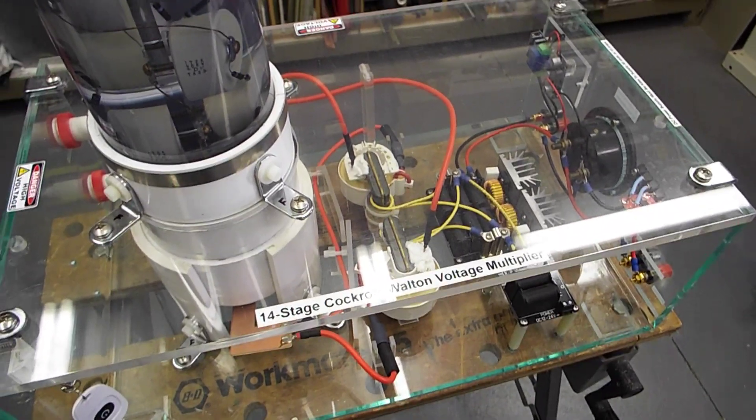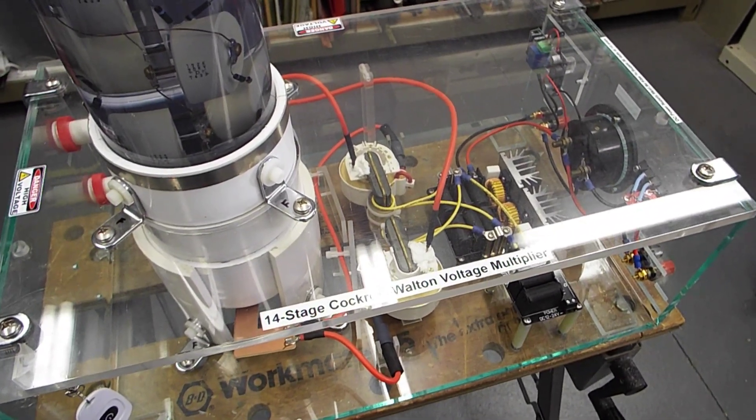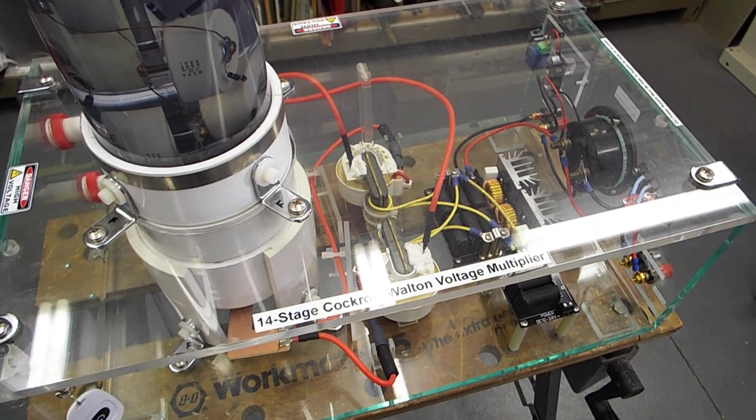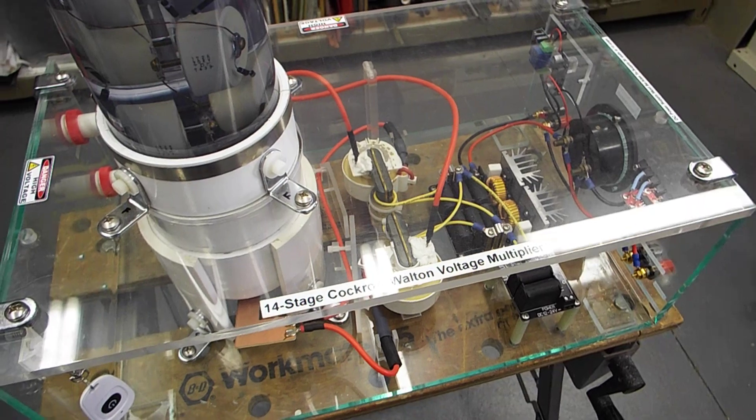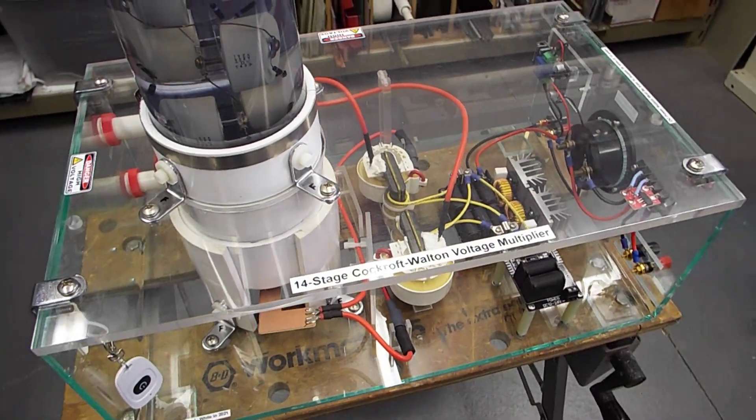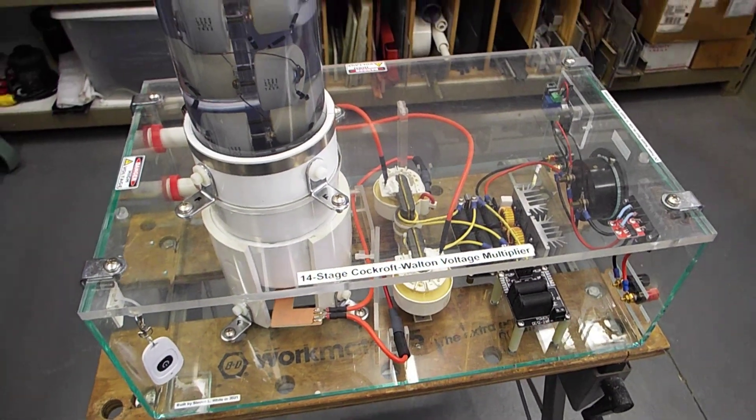Several people have asked me about how the high voltage power supply on my voltage multiplier works. So I'm making a video just to explain that. This is for my 14-stage Cockroft Walton voltage multiplier.